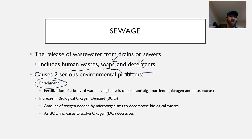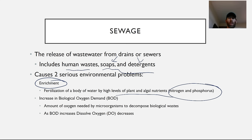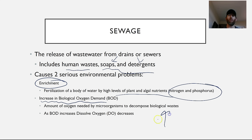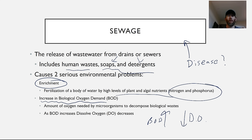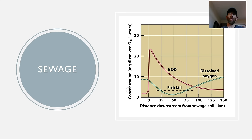We essentially fertilize the body of water with plant and algal nutrients — nitrogen and phosphorus — which can come from waste and also from soaps and detergents. When that happens, the eutrophication process begins and the corresponding increase in biological oxygen demand causes BOD to go up, meaning the amount of available dissolved oxygen goes down. The other major water quality issue caused by sewage pollution is disease, as many waterborne diseases are found in conjunction with human waste.